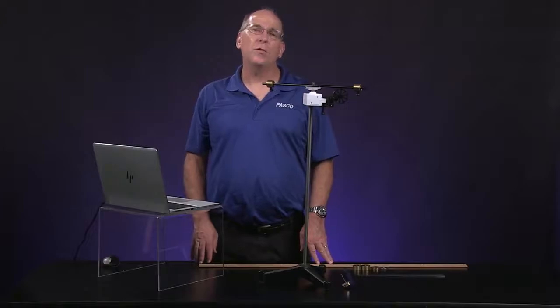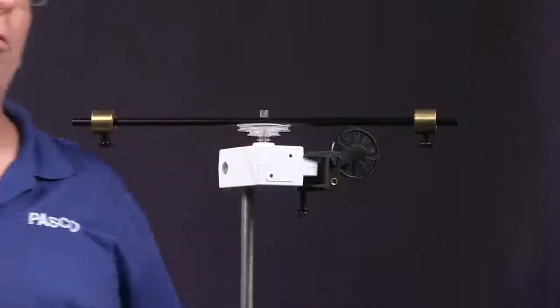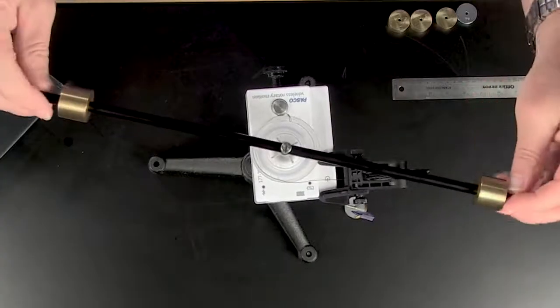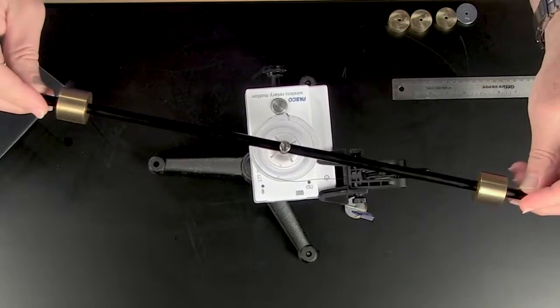We need to know the masses and dimensions of the parts of our rotating apparatus. There's a place in the lab right above the data table for you to write these down. The rotating arm has a mass of 0.027 kilograms.